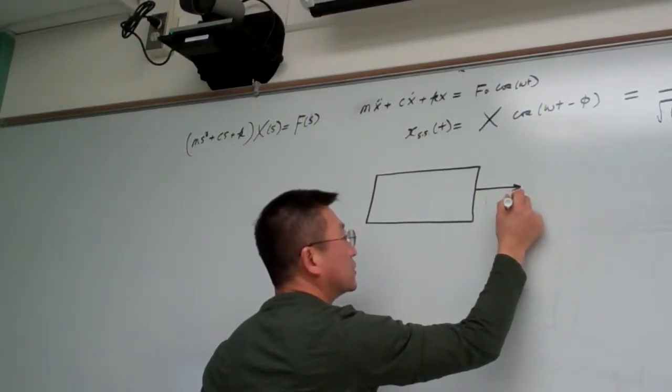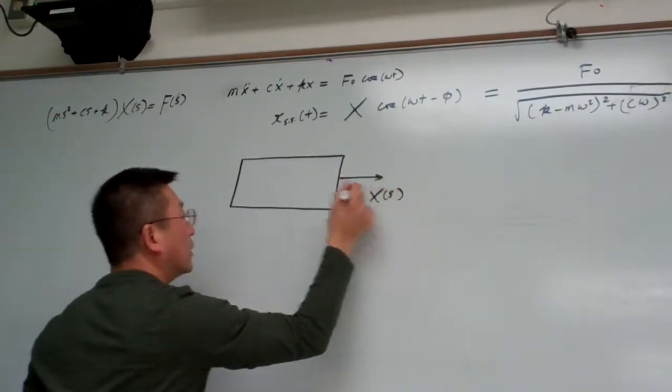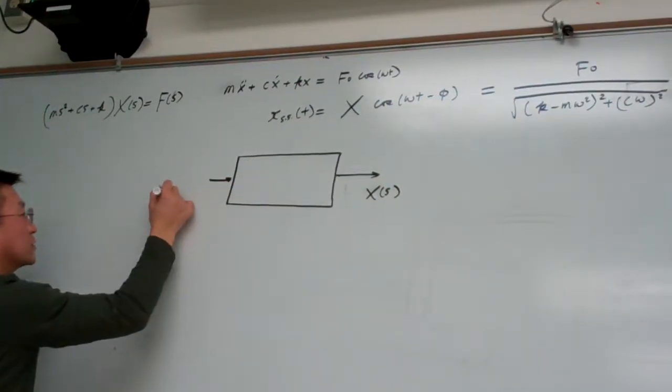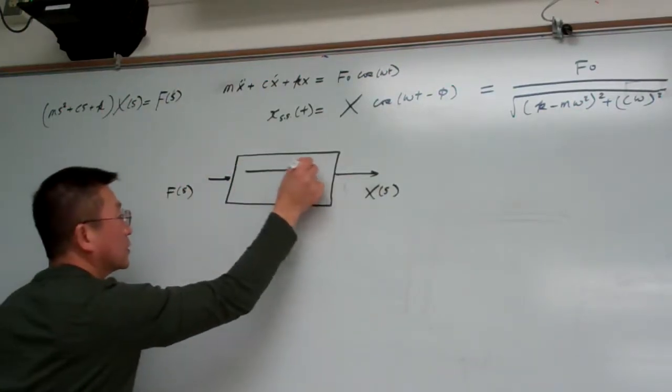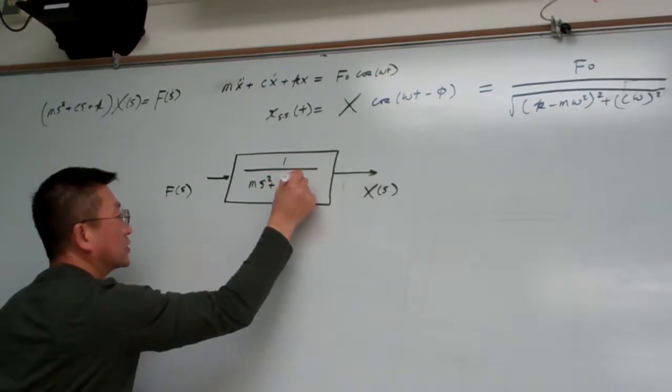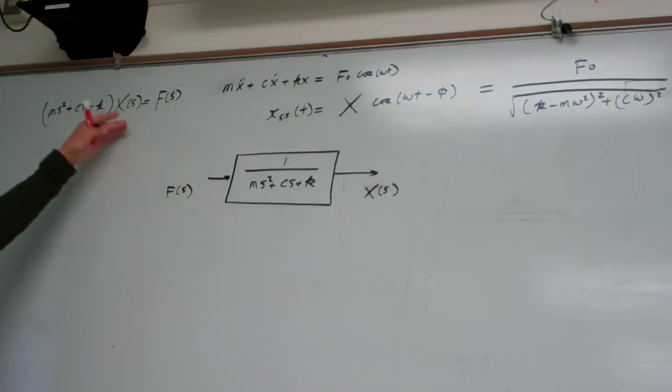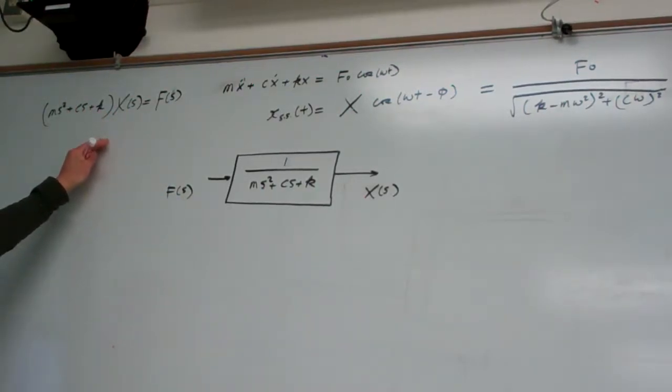So basically the transfer function is this: this is our output, that is capital X, and this is our input, that is our f, and this is m s squared plus c s plus k. So that is the transfer function representation of the system.